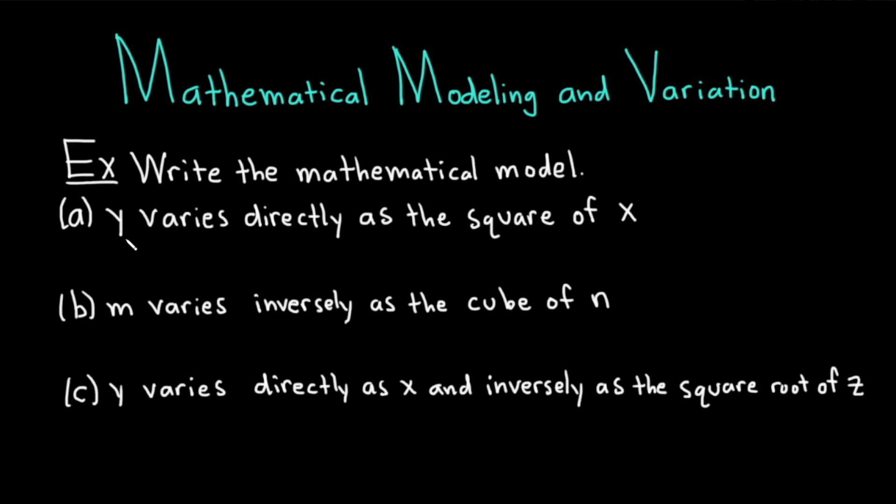In part A, we have y varies directly as the square of x. Let's work through this solution. You just have to read it really slowly. It says y varies directly—that's y equals. When it says directly, that basically means you're going to multiply. So you write your k, and then you multiply by what's coming next in the sentence. Y varies directly means y equals k times, in this case, the square of x. That's the same thing as x squared. So y equals k times x squared.